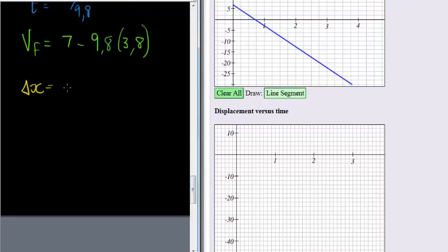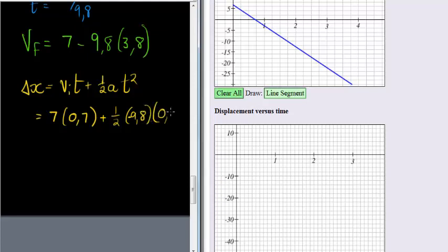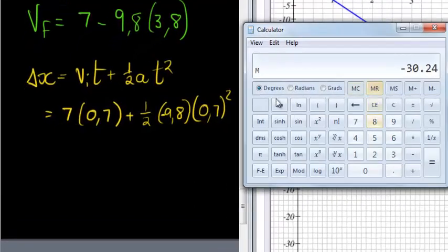For displacement, we are using the formula that initial velocity times time plus half acceleration times time squared. Initial velocity here being 7 times when I'm reaching that maximum height is at 0.7 times half acceleration is negative 9.8 times 0.7 squared. Let's go calculate that. 7 times 0.7 plus 0.5 times negative 9.8 times 0.7 squared is equal to 2.5. 2.5 meters is its maximum height.